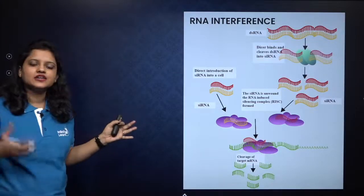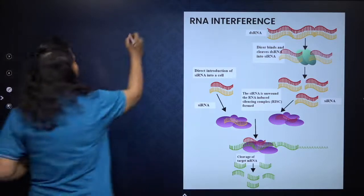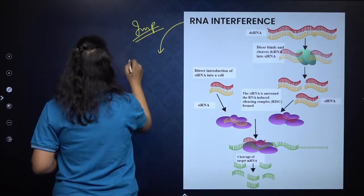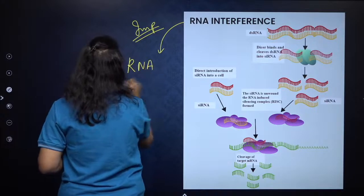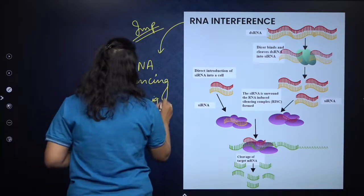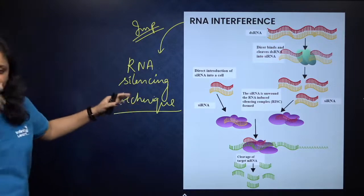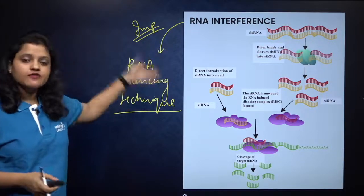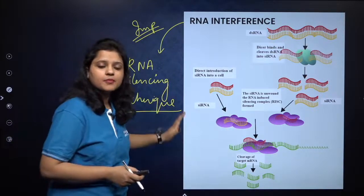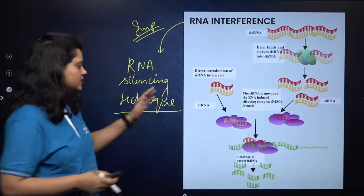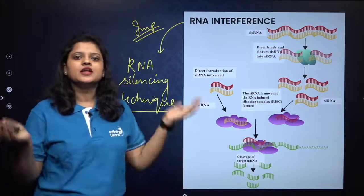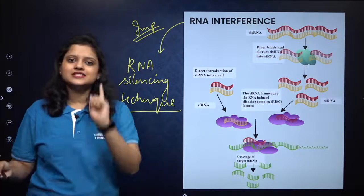Now, what is the RNA interference technique? This is very important for the exam. RNA interference is also known as RNA silencing. What we do in this technique is we silence or destroy the mRNA of the pathogen. After destruction of the mRNA of the pathogen, proteins will not be formed, and ultimately it will reduce the chances of survival of that nematode.